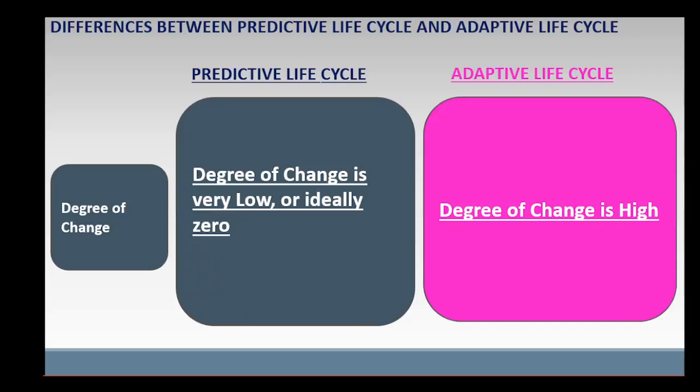In adaptive life cycle, the degree of change is high. That is, the plans or the product increments created in each cycle can be changed or refined with user feedback up to the last cycle when the customer is satisfied with the final product.